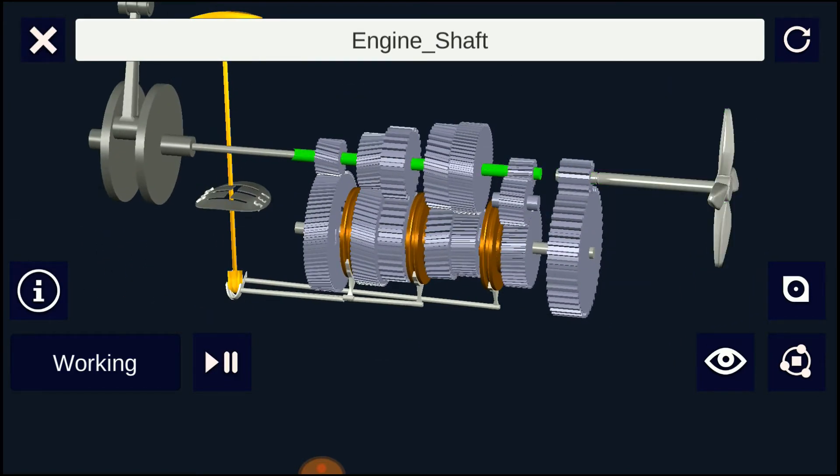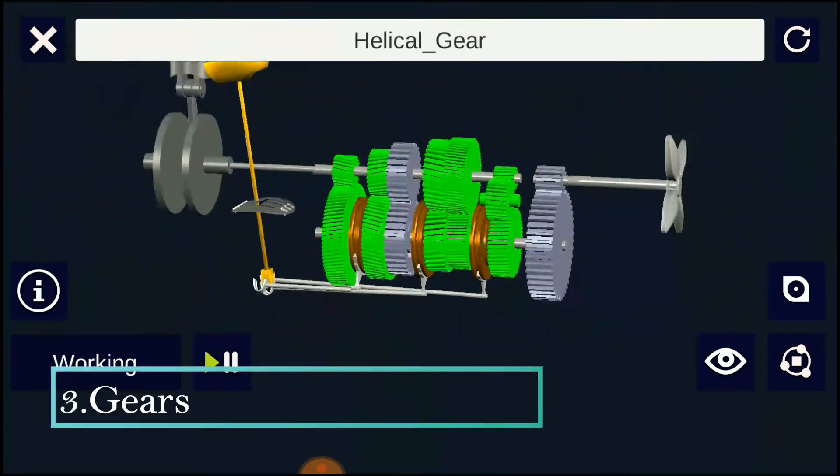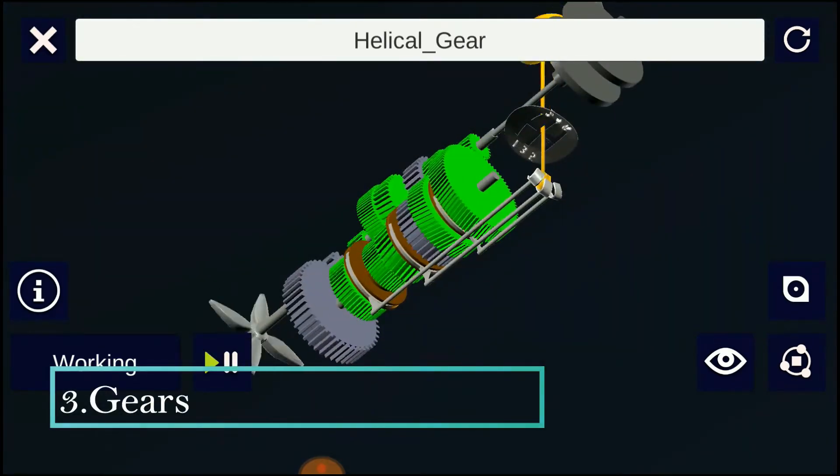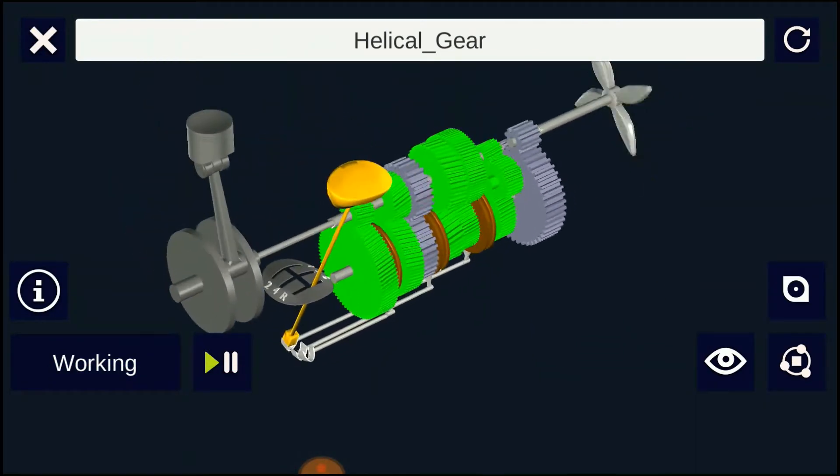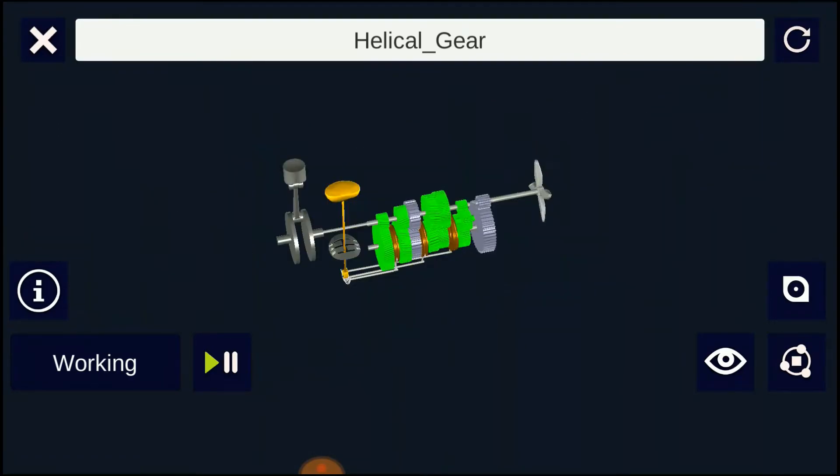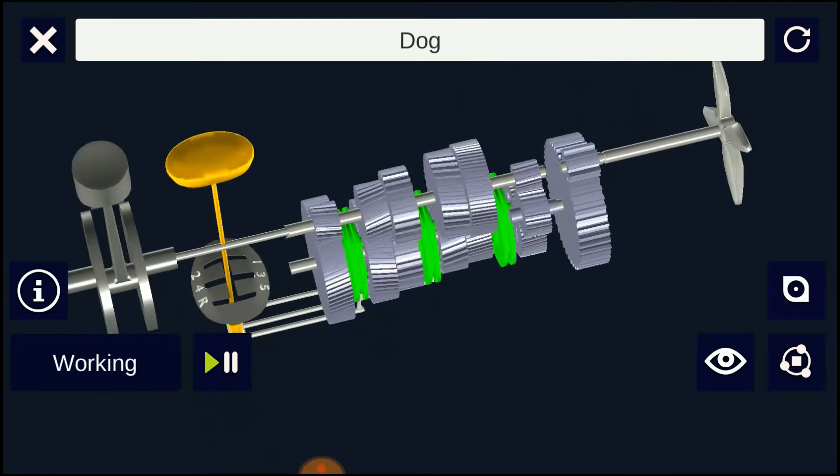Gears are used to transmit the power from one shaft to another. They are most useful component of gearbox because the variation in torque of counter shaft and main shaft depends on the gear ratio. The gear ratio is the ratio of the driven gear teeth to the driving gear teeth.